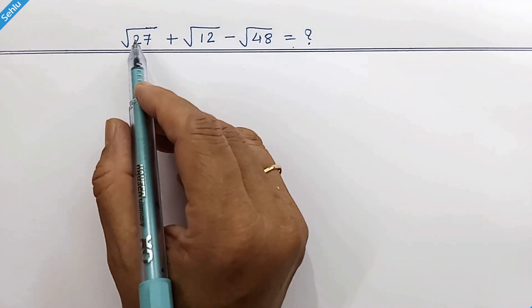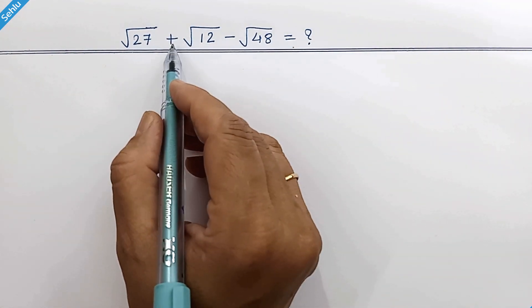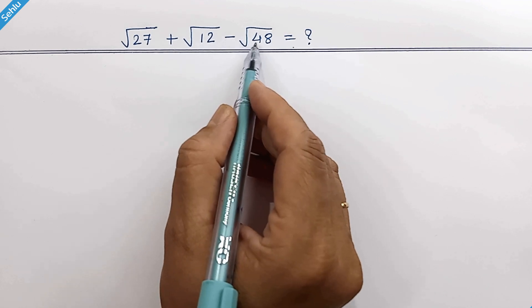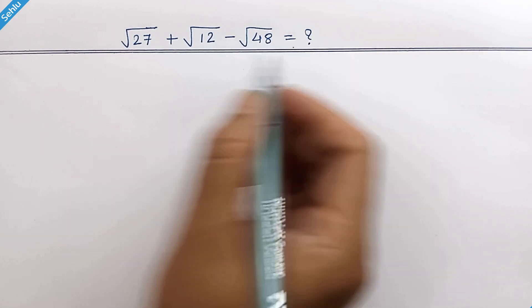Hello friends, the question is square root of 27 plus square root of 12 minus square root of 48 equals what? Let's find out.